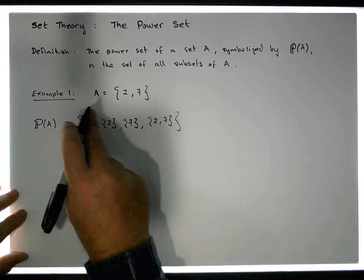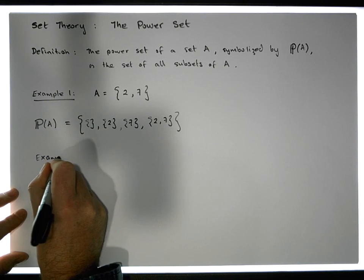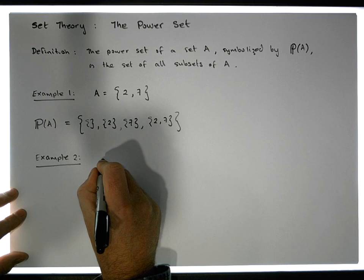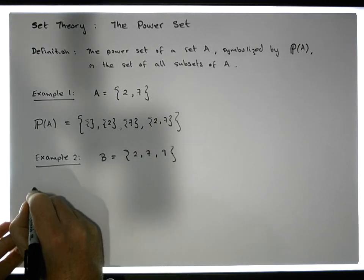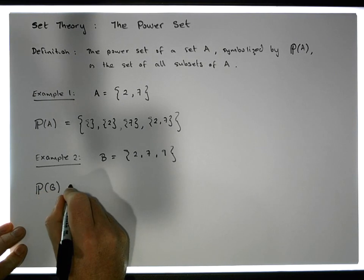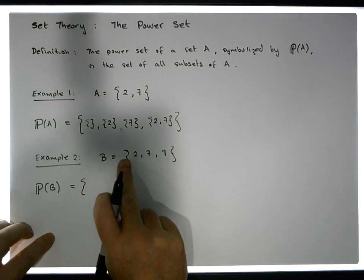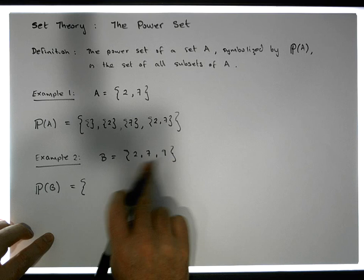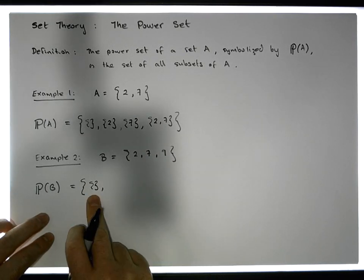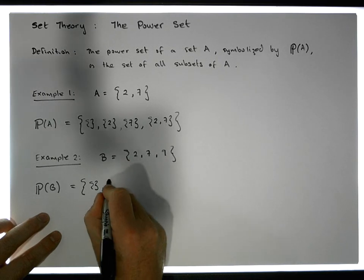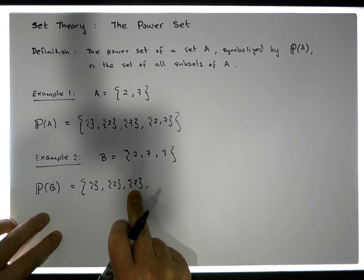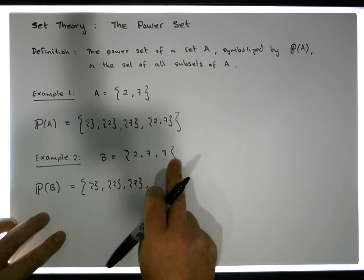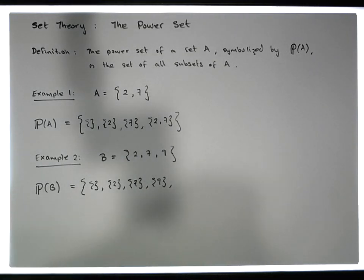Let's consider another example — a set of cardinality three. For example two, let's say B is equal to the set containing the values two, seven, and nine. We want to construct the power set of B. The power set by definition is a set containing all possible subsets. Once again, starting with the base case: the smallest possible subset is the empty set. The next smallest subsets are singletons. Taking the first element two gives us {2}, a subset of B. Taking seven gives us {7}, also a subset. Then finally we have {9}.